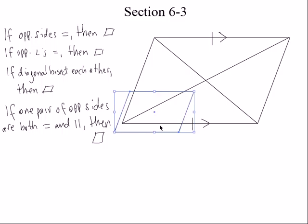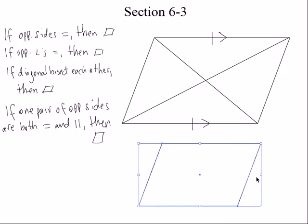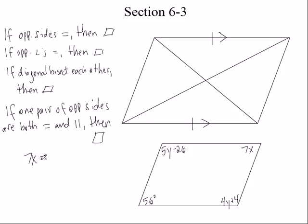So let's do a quick little example here. I've already copied the parallelogram, so let's just paste it and put it right here. Let's put some stuff in here. Let's say that this is 56 degrees, this is 7x, this is 5y minus 26, and this is 4y plus 4. The question says: find x and y so that each quadrilateral is a parallelogram. We don't know what's a parallelogram right now. To find out what x equals, I would put 7x equals 56, and then solve for it. So x is 8.